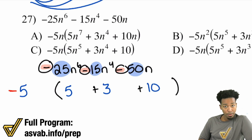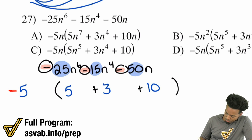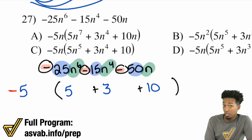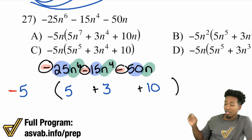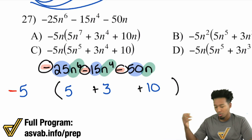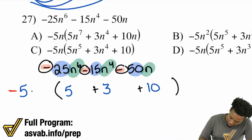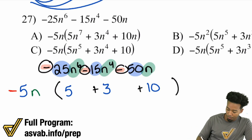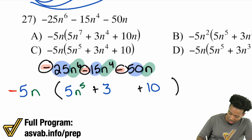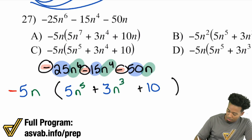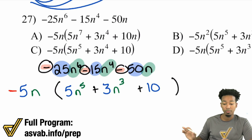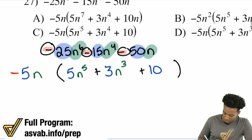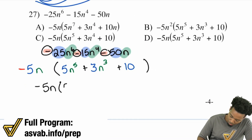Now let's go ahead and take care of the variables. I see here n to the power of 6, n to the power of 4, and just n. How many n's do they all share? Just one. The first one has 6, the second one has 4, the last one has 1 — that means they all have at least one in common, one in common only. So I'm going to pull out just one n and then leave the rest where they were. n to the power of 6 — take an n out — is n to the power of 5. n to the power of 4 — take away one of those n's — is n to the power of 3. And then lastly, 50n — take away the n — is just 10.